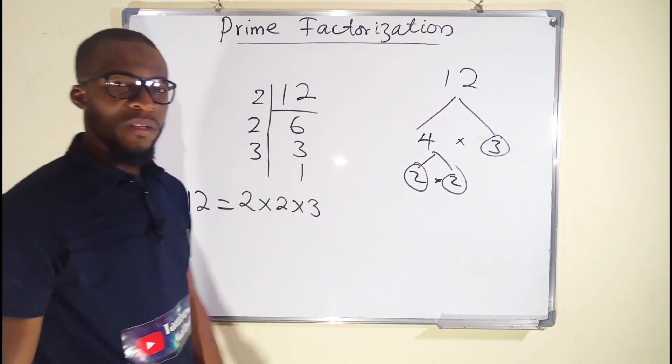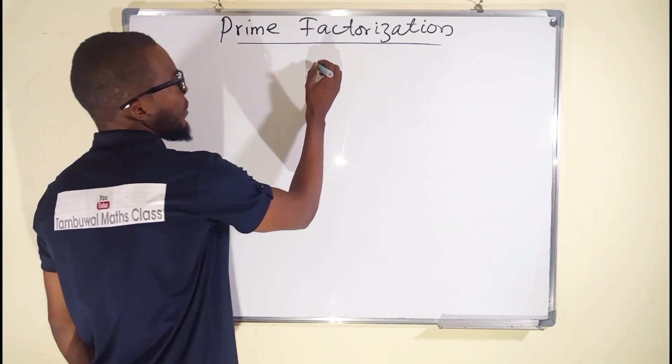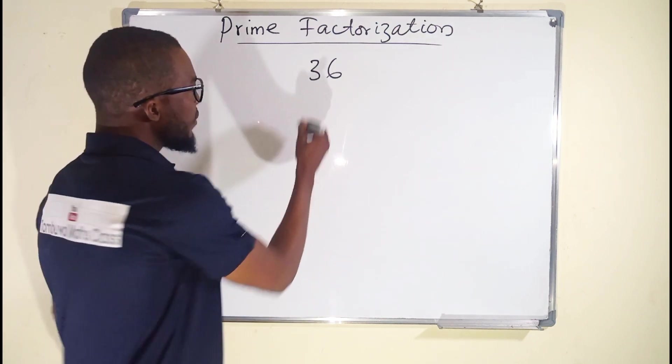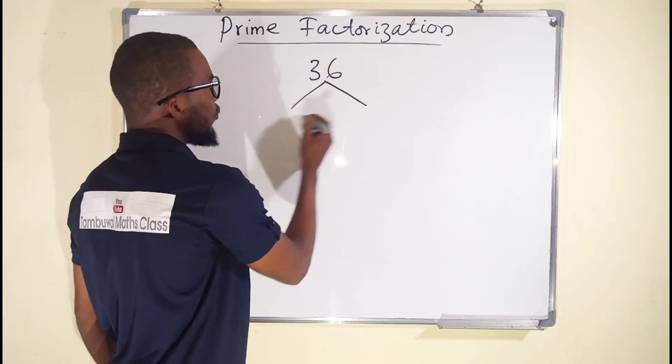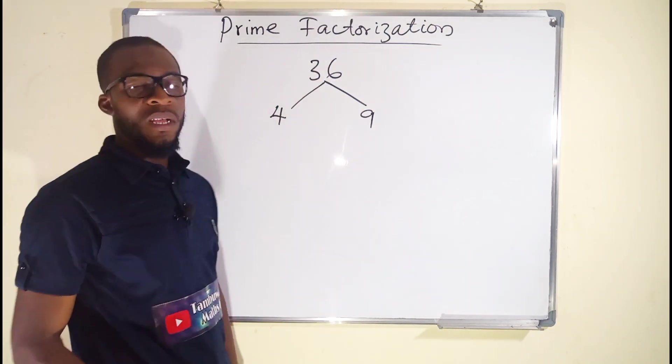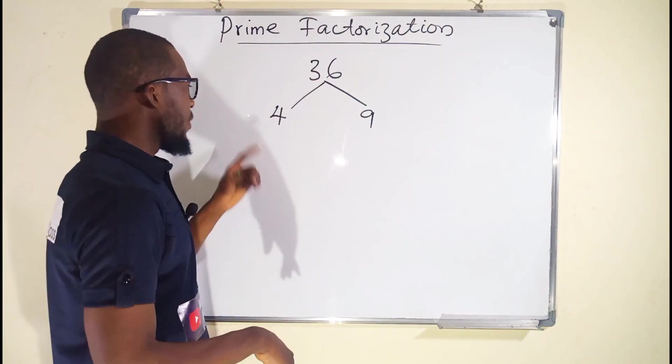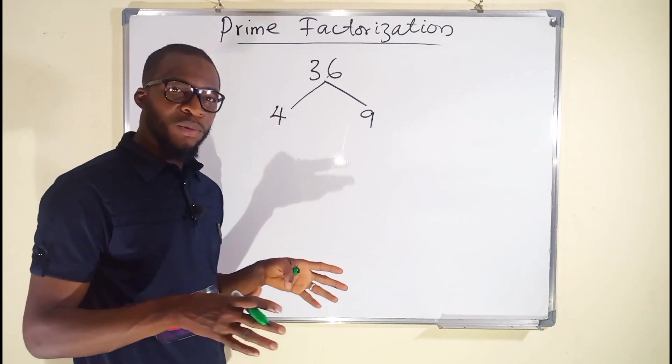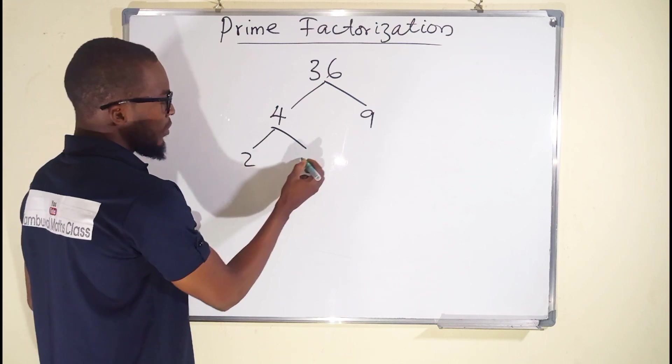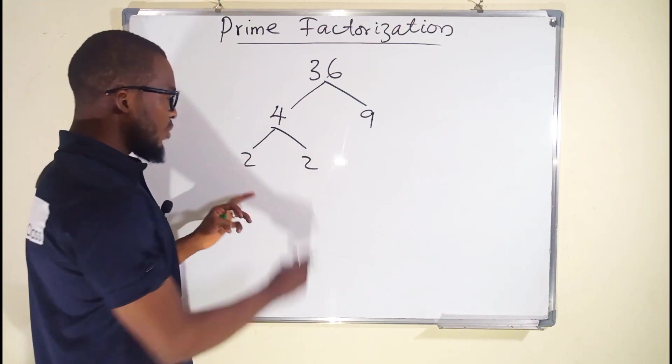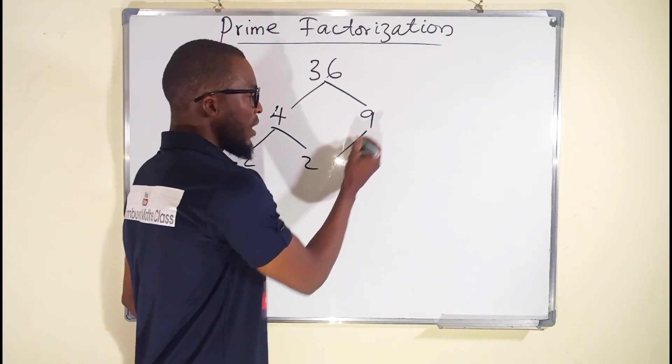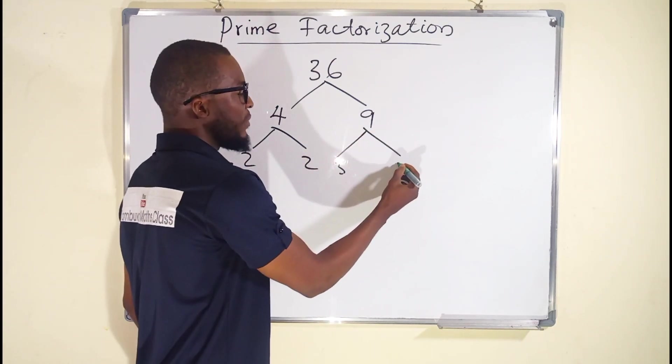Now let us take another number, 36. 36 can be splitted into 4 times 9 because 4 times 9 is equal to 36. 4 and 9 are all composite numbers because they have more than 2 factors. 4 can be splitted as 2 multiplied by 2. So now all the 2 numbers are prime. So we stop here. 9 can be splitted as 3 times 3.